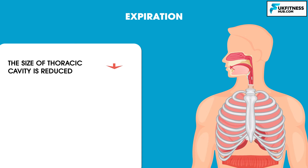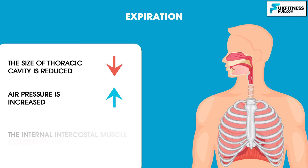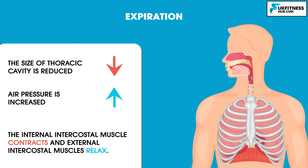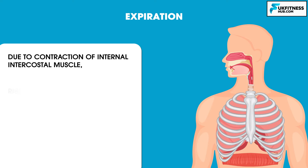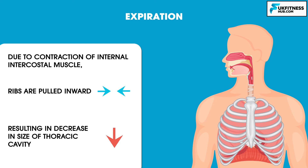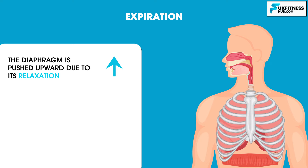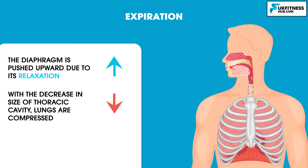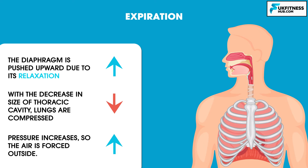Expiration takes place when the size of the thoracic cavity is reduced and air pressure is increased. The internal intercostal muscles contract and the external intercostal muscles relax. Due to the contraction of the internal intercostal muscles, ribs are pulled inwards, resulting in a decrease in size of the thoracic cavity. Furthermore, the diaphragm is pushed upward due to its relaxation. With the decrease in size of the thoracic cavity, the lungs are compressed, pressure increases, and air is forced outside.